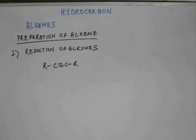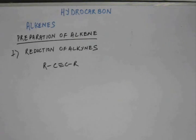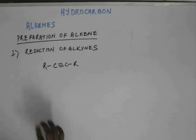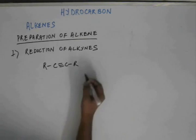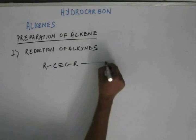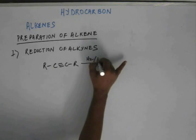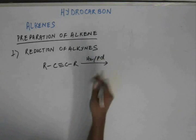An alkyne has three bonds. If you reduce one bond, that will become an alkene. And if you reduce both the pi bonds, that will become an alkane. Before studying this reduction, let me quickly give you an idea of what a reduction is. Reduction generally is addition of hydrogen in the presence of a catalyst like palladium, platinum, or nickel.